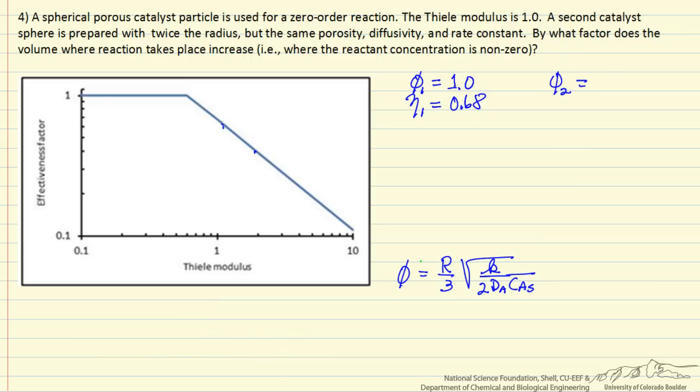Our new Thiele modulus, when we double R, then is 2. And the effectiveness factor, again reading off this plot, is about 0.40.